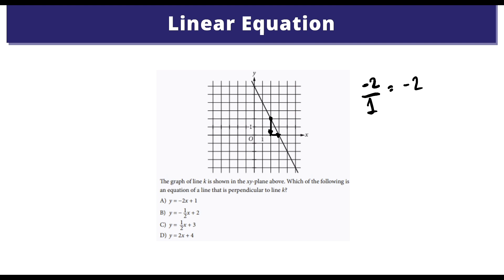So negative 2 is the slope. But now we have to remember they're asking us for the perpendicular line. So what we must do is find the negative reciprocal of this. We just take the negative 2 and we put it over 1, and we take out this negative sign. Because negative 1 times negative 1 half is 1 half, we know the slope is 1 half.